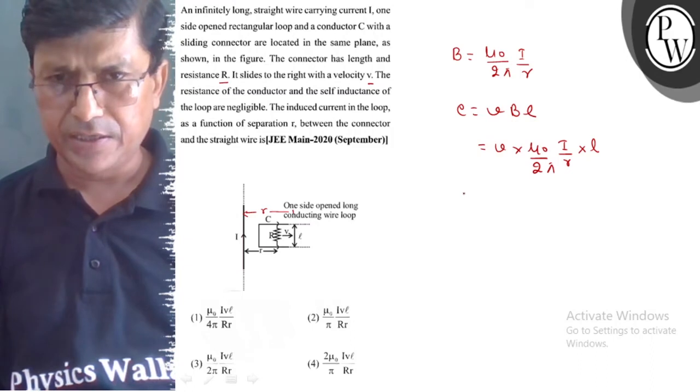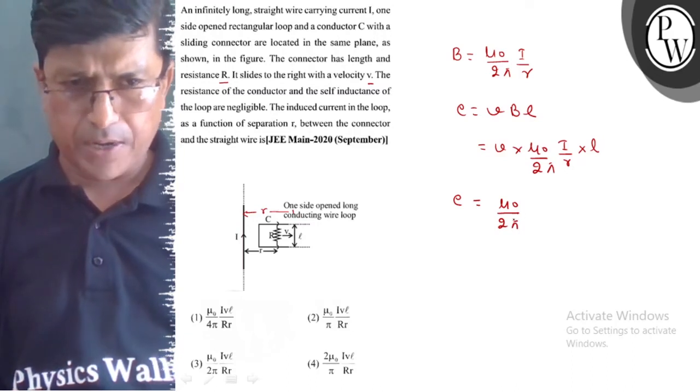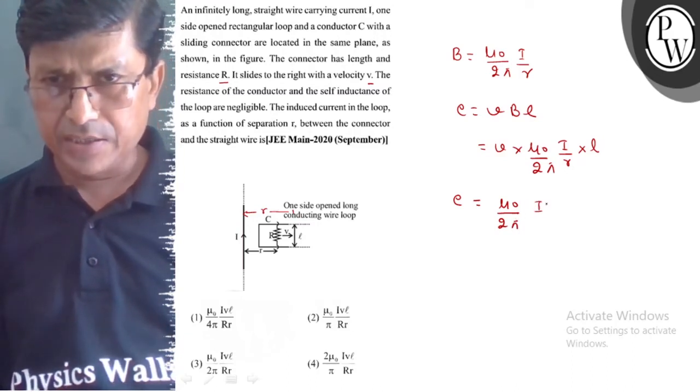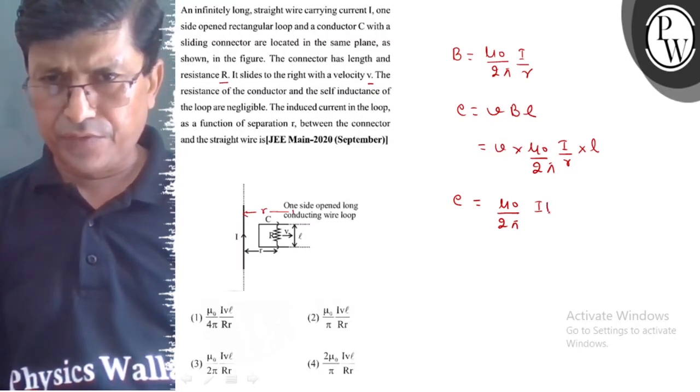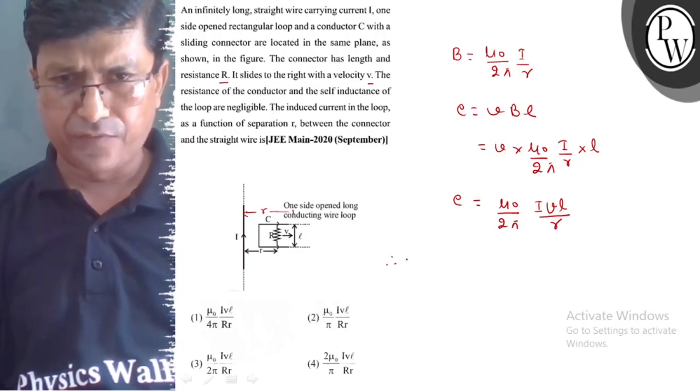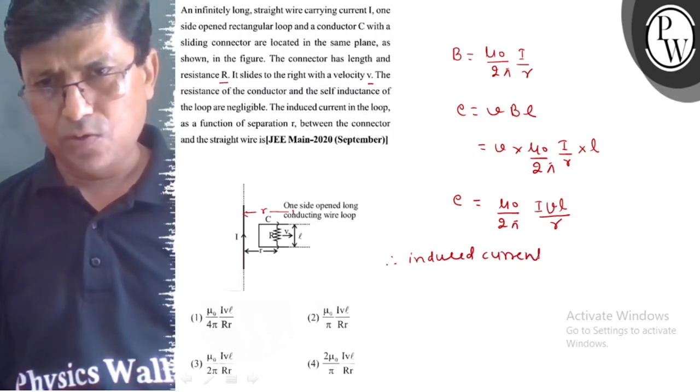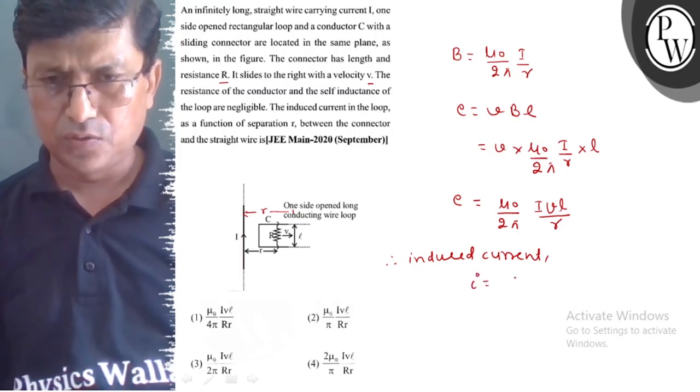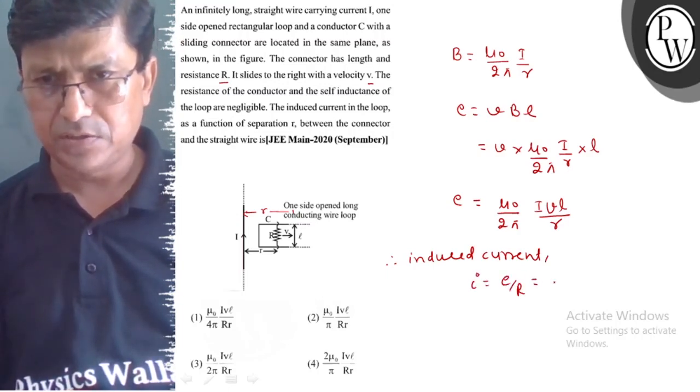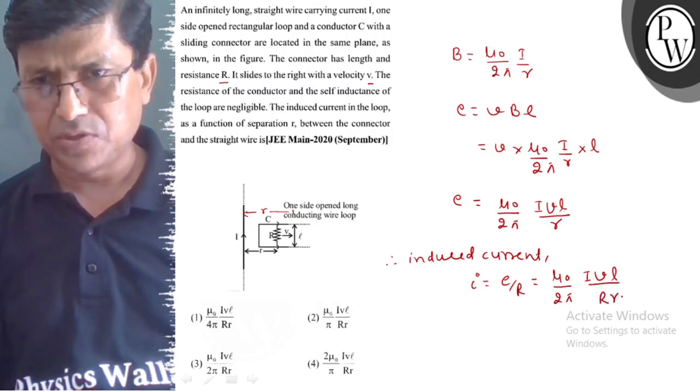If we calculate the value, μ₀/2π times IVL/r. Therefore, induced current is equal to EMF/R, which means μ₀/2π times IVL divided by capital R times small r.